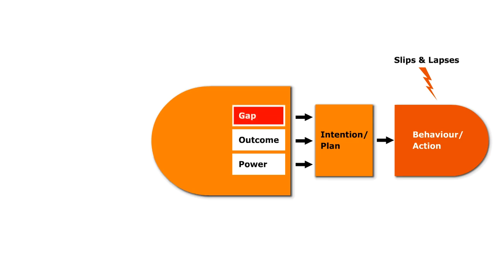The Gap question: Is there a gap between the current situation and how I want it to be? Is there a need to do something? The Outcome question: What's in it for me when I do this? The Power question: